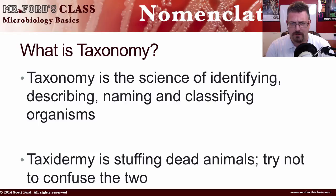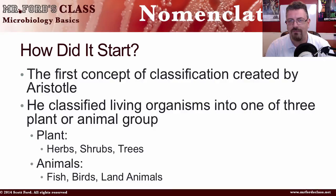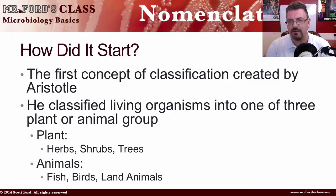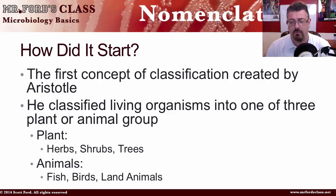So how did this whole thing begin? Who is to blame for us having to learn different names of critters? Well, we can thank an old Greek guy by the name of Aristotle. Aristotle classified living organisms into one of three groups — plant or animal. If you were a plant, you could be classified as herbs, shrubs, or trees. If you were an animal, you could be classified as fish, birds, or land animals. This was a very primitive attempt at classification, but somebody had to start it. And this naming convention lasted for quite a long period of time — almost about 2,000 years.